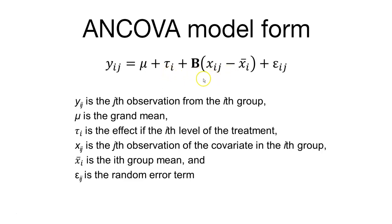We also have estimates of different values for beta, represented by a matrix capital B. In our case we're looking at one slope and how that slope differs across different values of tau. x sub ij is the jth observation from the covariate in the ith group, and x bar sub i is the mean of the ith group. We also have random error that we can't account for in our model. This is what the model form for the analysis of covariance looks like.